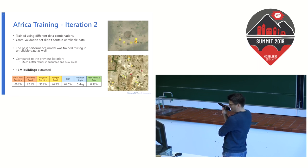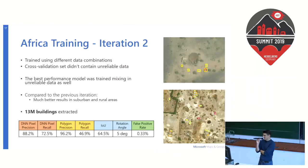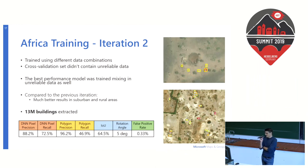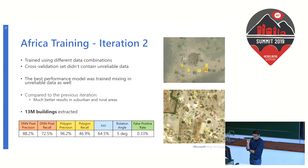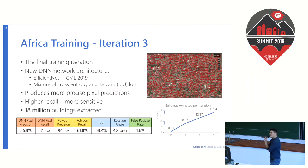Here are the results of iteration two. The most interesting learning is that the training which mixed unreliable data with good data gave the best results. We drastically improved recall, especially in rural areas as you can see in the images, and with this approach extracted around 13 million buildings in Tanzania.